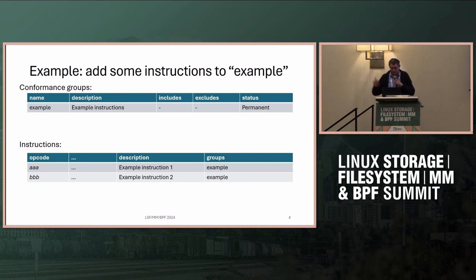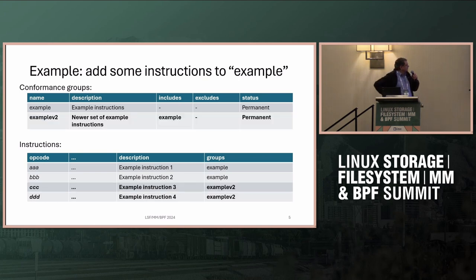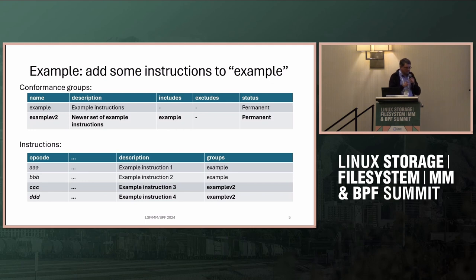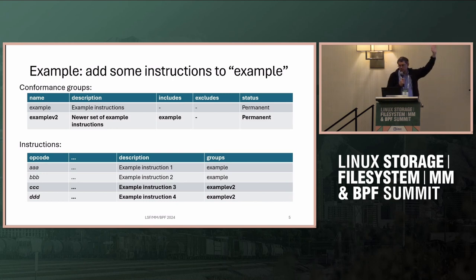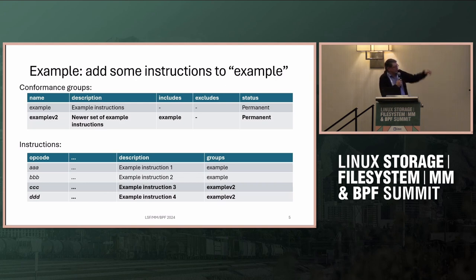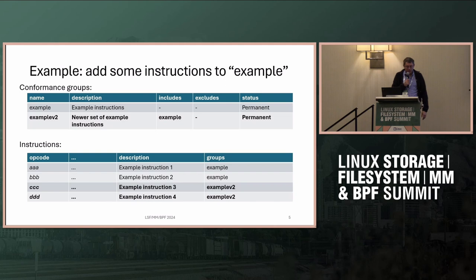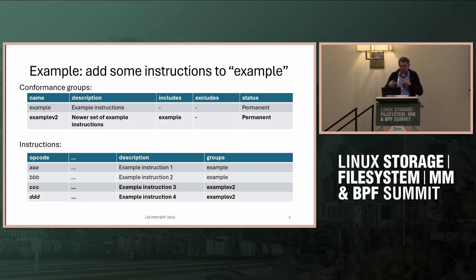What we can't do is modify the existing set. The existing set has that name, and anything conformant to it remains conformant to it. Modifying it would make others non-conformant. So what do you do? You define another name — in this case I arbitrarily used 'example V2.' The new instructions are in example V2, and in the 'includes' column I say the only way to claim compliance to example V2 is to also inherit all the compliance of example. That way, claiming example V2 means you're compliant to all four instructions. It's a simple way to add things — you just bump a version or label.